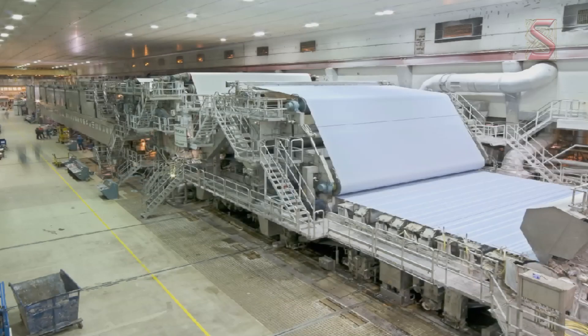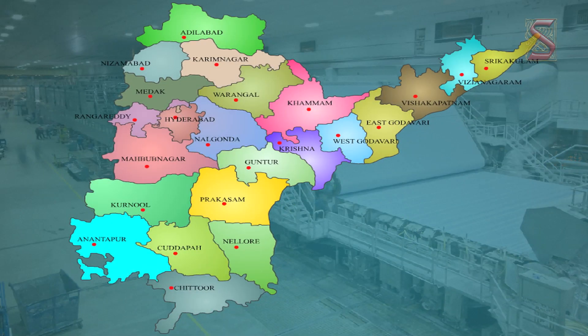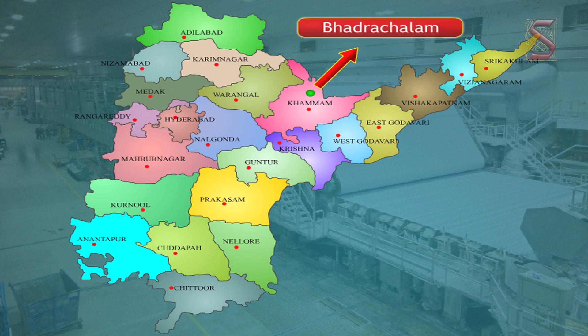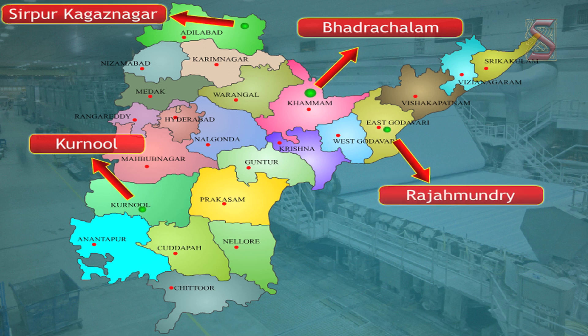The paper mills are the places where paper is produced. The four paper mills in Andhra Pradesh include the paper mills in Bhadra Chalam, Kurnool, Rajamundra and Sirpur Kagaznagar.